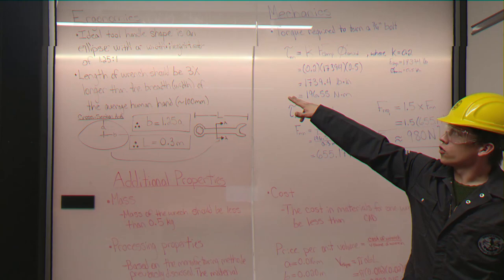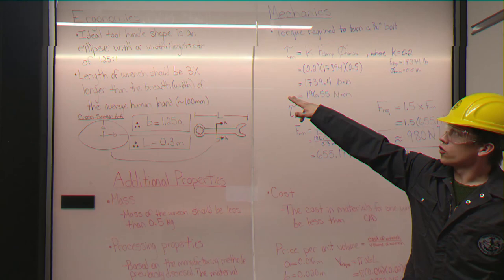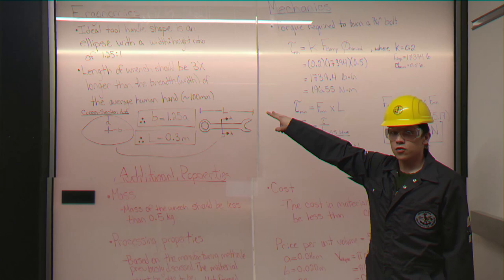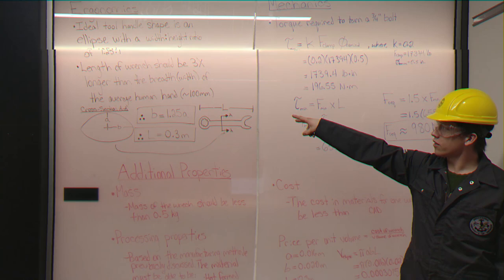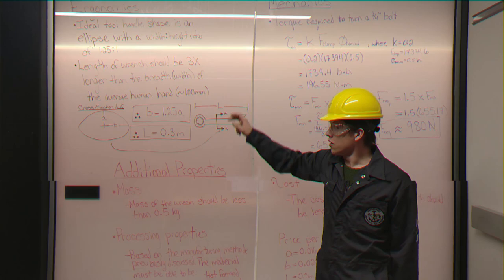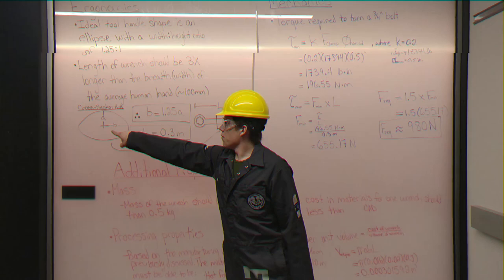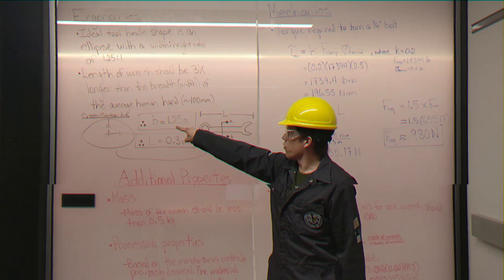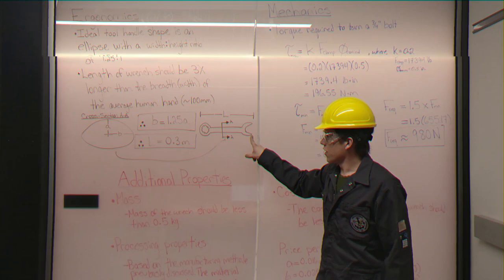We start with ergonomics. The ideal tool handle shape is an ellipsis with a width-to-height ratio of 1.25 to 1, and the length of the wrench should be triple the width of the average human hand, which is roughly 100 millimeters. So, if we look at the cross-sectional area of the ellipsis, we can say that the radial width of the ellipsis is 1.25 times the radial height. And then the length of the entire wrench should be triple 100 millimeters, which is 0.3 meters.